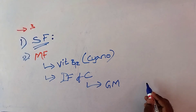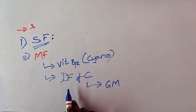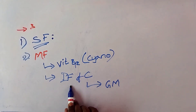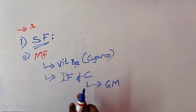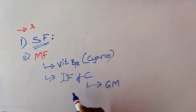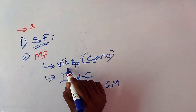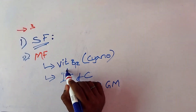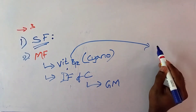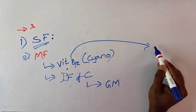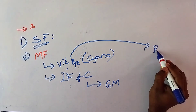The Intrinsic Factor of Castle is important because Vitamin B12 mostly acts on the maturation of RBC. However, Vitamin B12 itself won't be absorbed on its own — it is absorbed because of this Intrinsic Factor of Castle. Because Vitamin B12 is an extrinsic factor, the Intrinsic Factor of Castle is essential for its absorption.